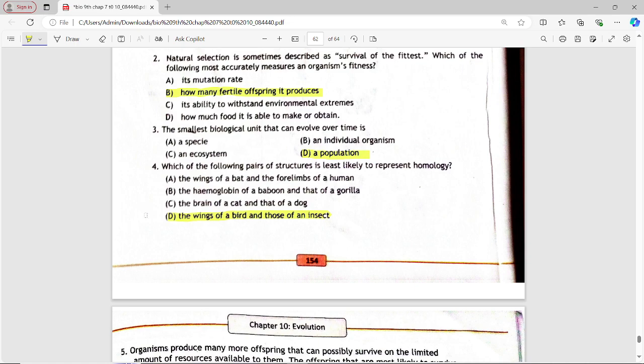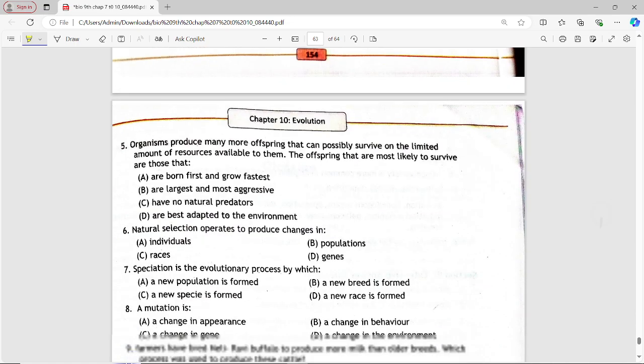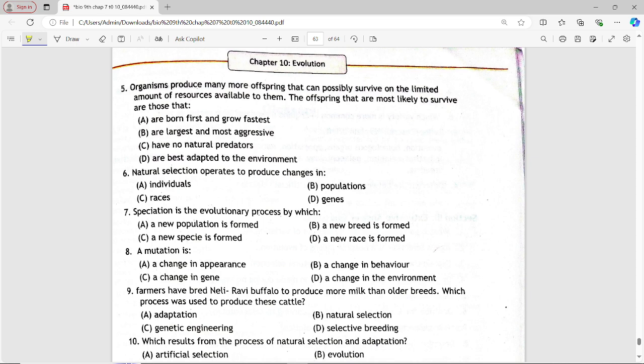Next MCQ is, organisms produce many more offspring that can possibly survive on the limited amount of resources available to them. The offspring that are most likely to survive are those that. Options are: are born first and grow fastest, are largest and most aggressive, have no natural predators, are best adapted to environment. Answer is option D, are best adapted to environment.